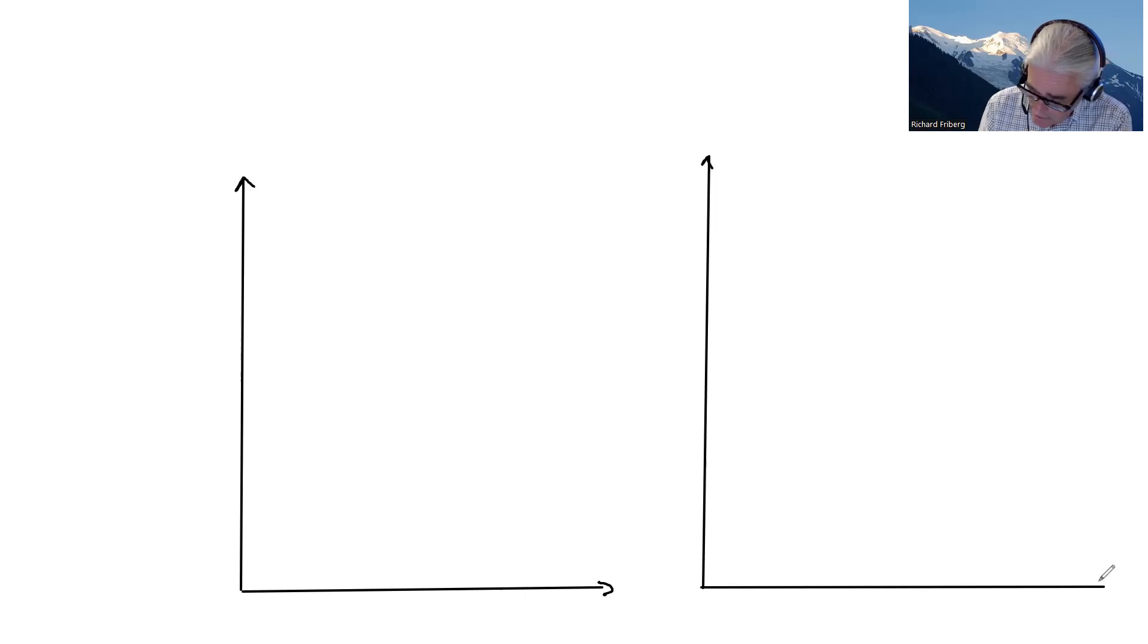So we're going to be looking at the situation where we have a price here on vertical axis. We have aggregate quantities here. So this is the market, looking at the whole market. Say market for bread.